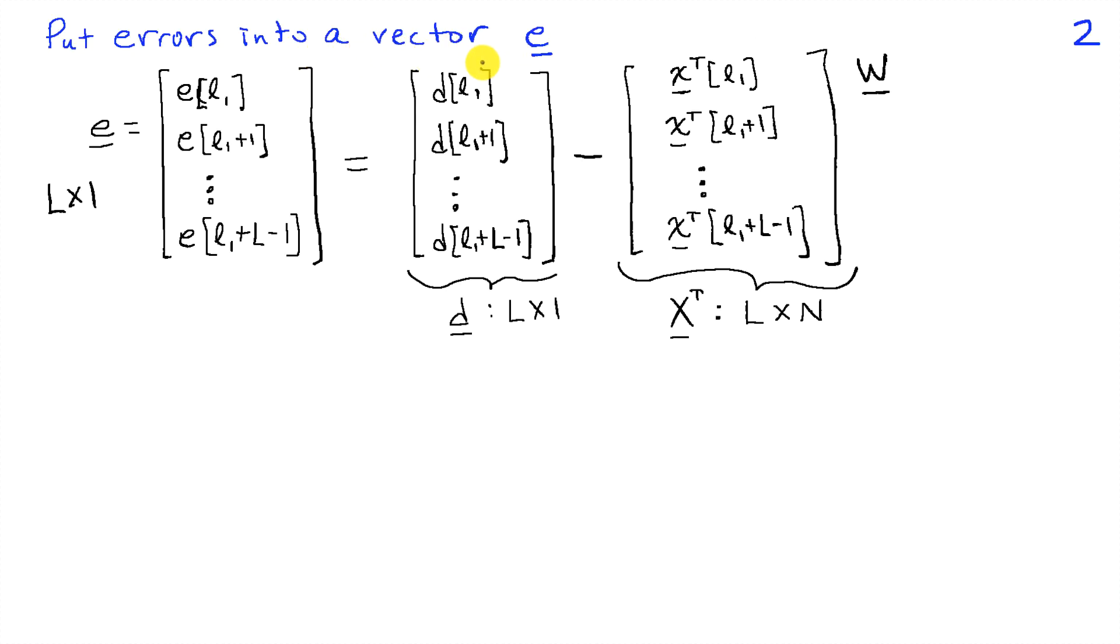Next, we're going to collect all of our errors for the time range that we're interested in into a vector underscore E. So here I've defined that vector. It's an L by 1 vector because we have capital L time samples we're interested in, and then we can put the corresponding terms of D and the FIR filter output into vectors on the right-hand side. And I'm going to collect each of the inner products involving the input times the FIR filter weights, W, into a matrix capital X transpose times W. And since we have capital L time values here that we're interested in, the matrix underscore capital X transpose is capital L by N dimensions.